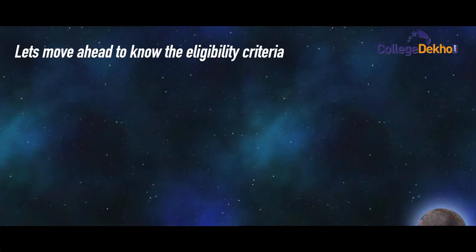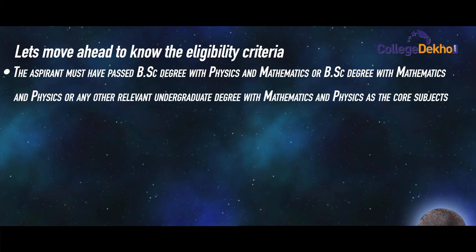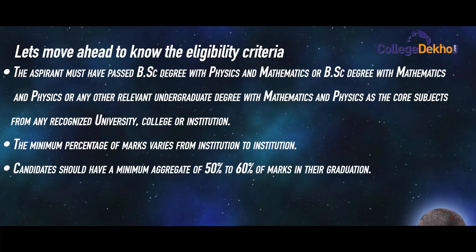The eligibility criteria: candidates must have passed a BSc degree with Physics and Mathematics, or a BSc degree with Mathematics and Physics, or any relevant undergraduate degree with Mathematics and Physics as course subjects from any recognized university, college, or institution. The minimum percentage of marks varies from institution to institution, but candidates should generally have a minimum aggregate of 50 to 60 percent in their graduation.